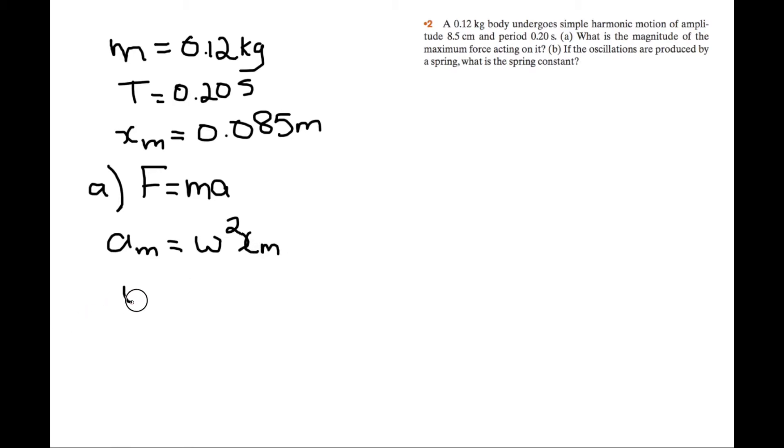Angular velocity is equal to 2π over the period, which equals 31.4159 radians per second.